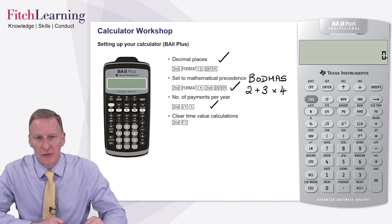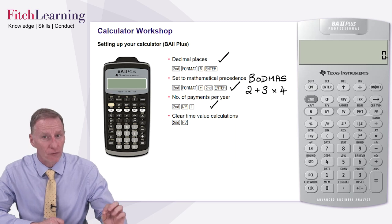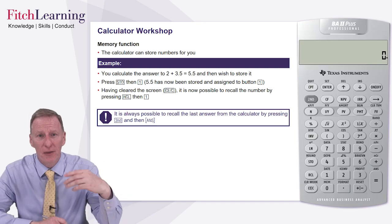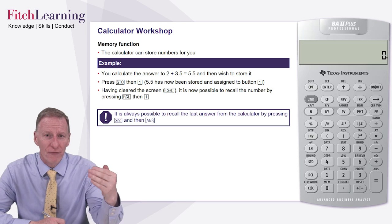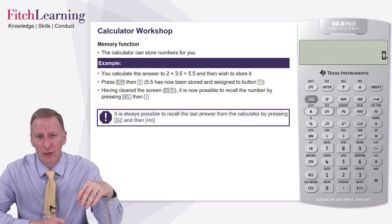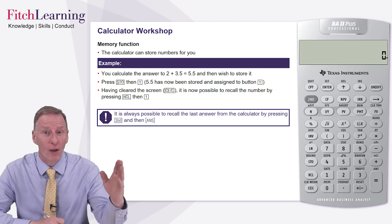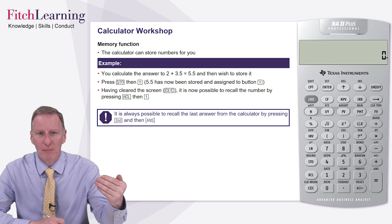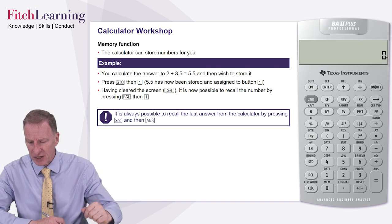Before we look at those calculations, let's look at one other useful feature of the BA2 Plus. And that is the memory function, because often we're not going to be able to remember all of the facets of a particular calculation, and it's extraordinarily useful to be able to store that within the calculator. And the good news is that this calculator doesn't have one memory, it actually has 10. So we have a memory, in effect, lying behind the zero, and then the digits one to nine.